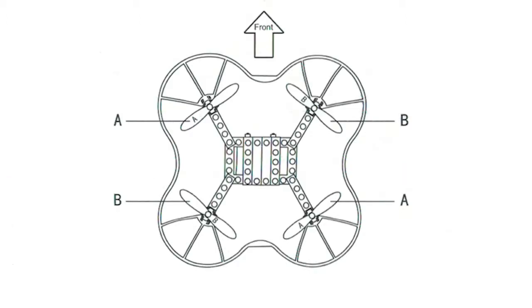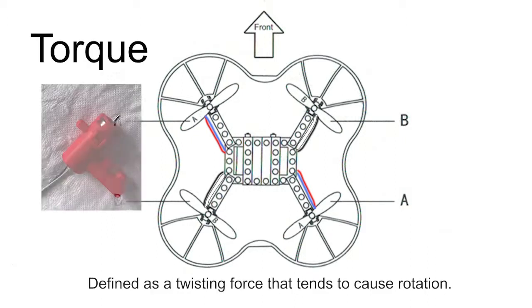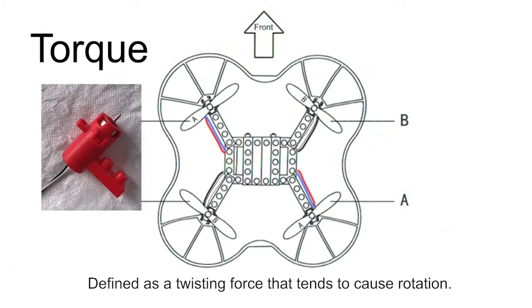In any quadcopter design, the motors are always going to be arranged diagonally like this, and that's to combat what we call torque. If you've ever turned on a motor without it being properly fixed down, you know exactly what I mean.